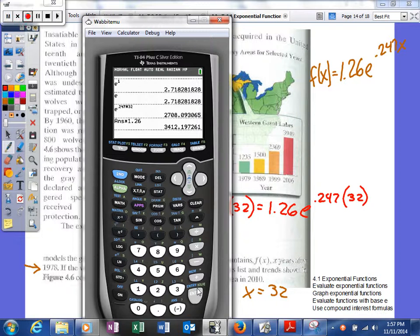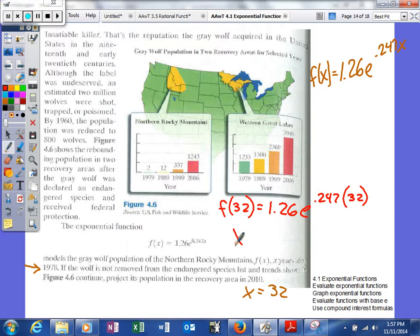So our gray wolf population will be roughly about 3,412. So f(32) will be roughly 3,412.